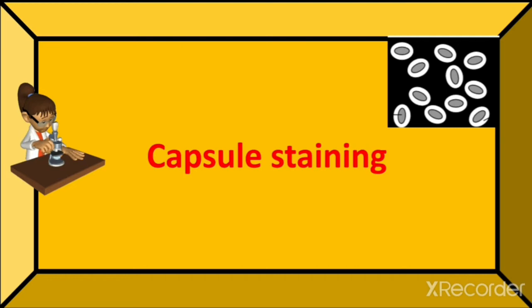Here we are going to understand the aim, the requirements for capsule staining, procedure for capsule staining, the mechanism behind capsule staining, and at last we are going to understand how we are going to observe the capsule staining under the microscope and the results. So before going to start our lecture, if you are new to my channel subscribe to my channel and click on the bell icon for more updates. Let's start our lecture.